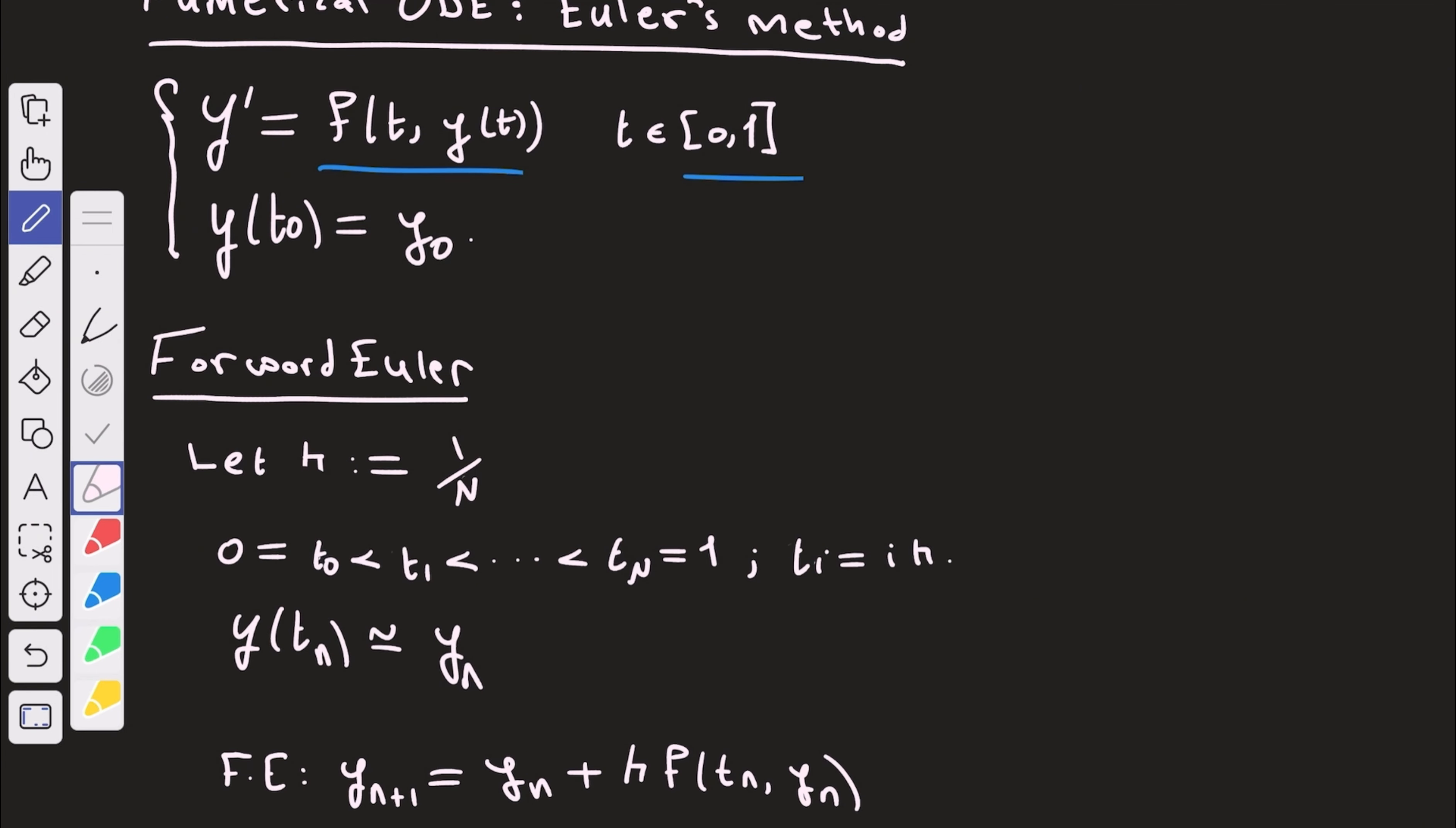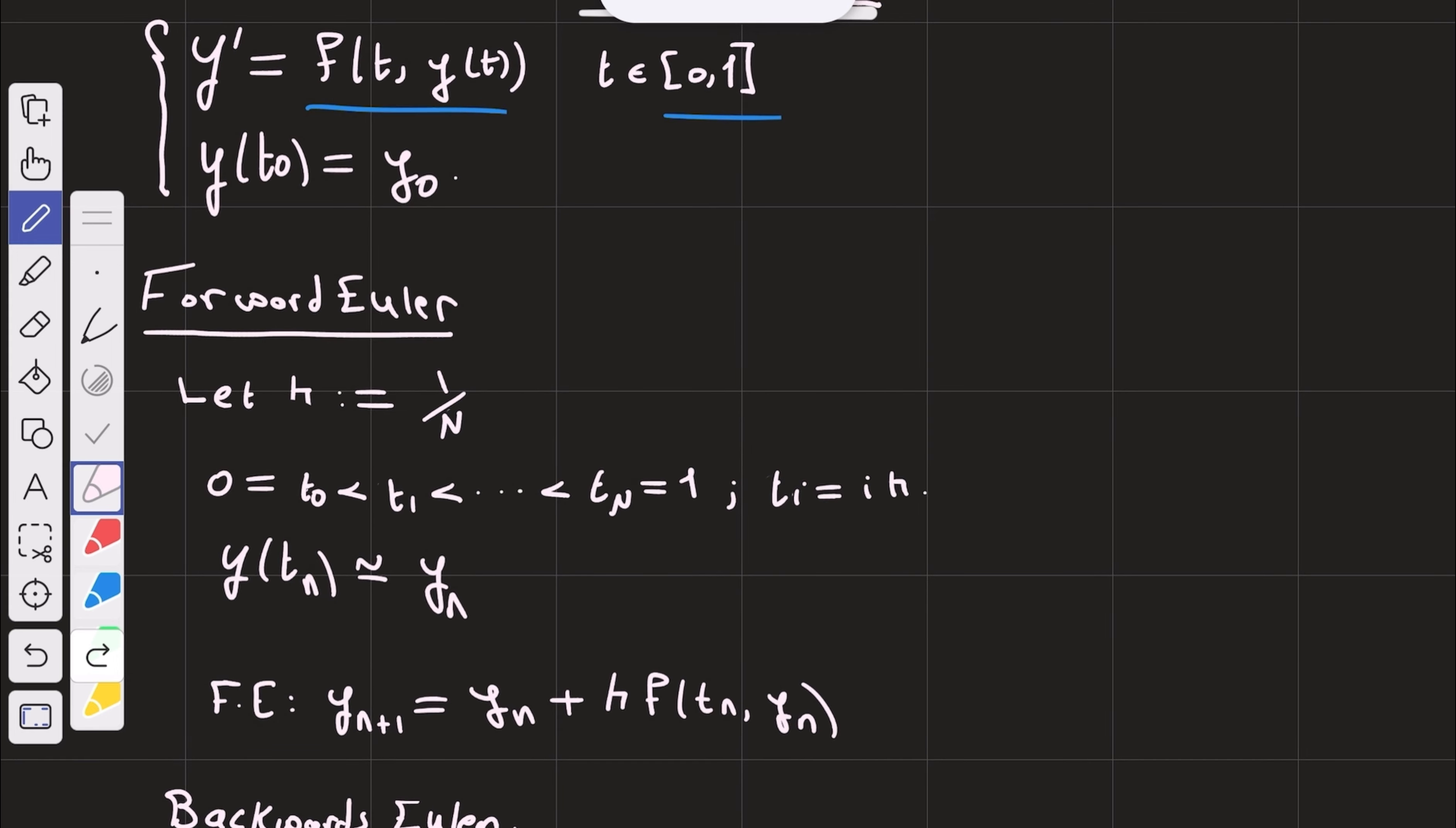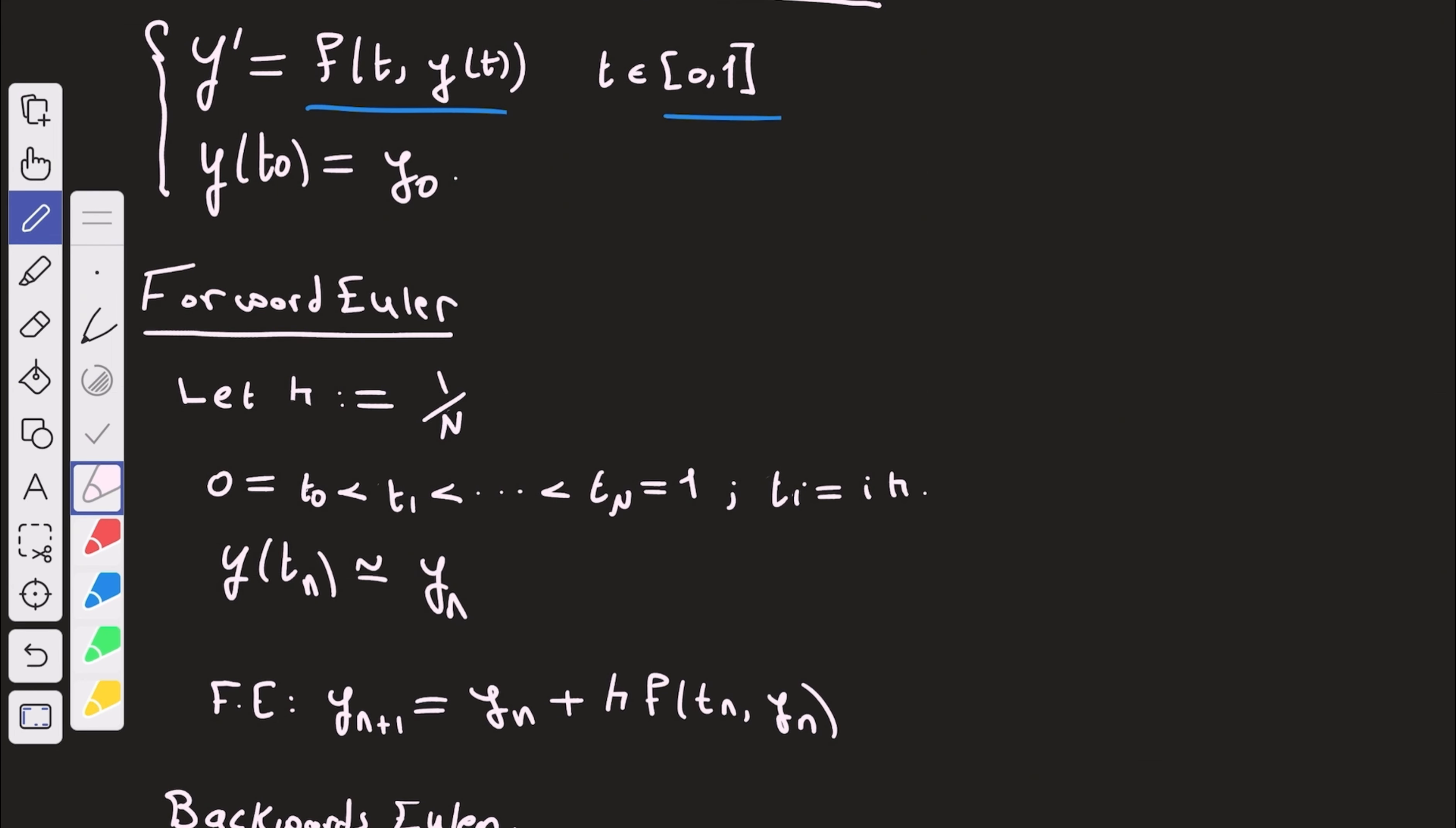So let us start by deriving the first method, which is forward Euler's method. Now, here's the idea. Whenever you want to derive a numerical method, you need to start by discretizing your space. You need to start by discretizing the domain you're working with. In this case, our domain is just the interval 0, 1.